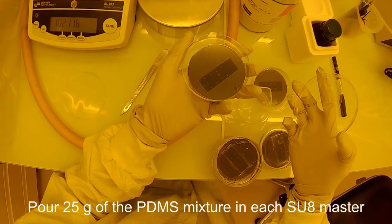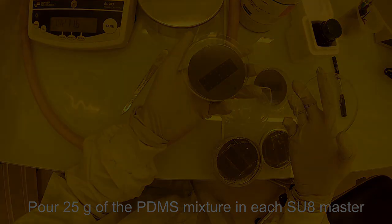Pour 25 grams of the pre-mixed PDMS into the first SU-8 master containing the patterns of the microfluidic channel and the pillars up to a height of approximately 5 mm. Then pour the remaining 25 grams of the PDMS.